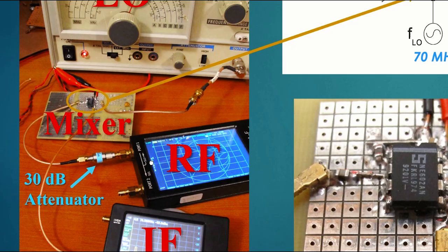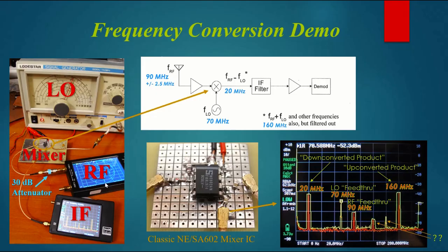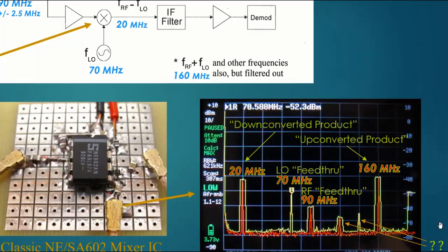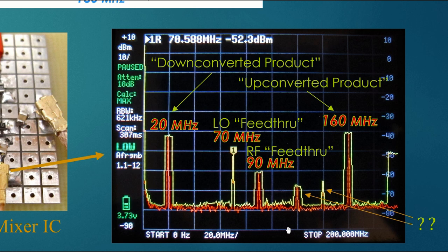The output of the nano VNA goes through a 30 dB attenuator. Finally, the IF output is hooked to one of these tiny SA spectrum analyzers. And you can see the result over here on the right-hand side. I have the tiny SA set to sweep between 0 Hz and 200 MHz. So each one of these divisions is 20 MHz. And there's a lot of stuff on this screen. So let's take it a piece at a time.